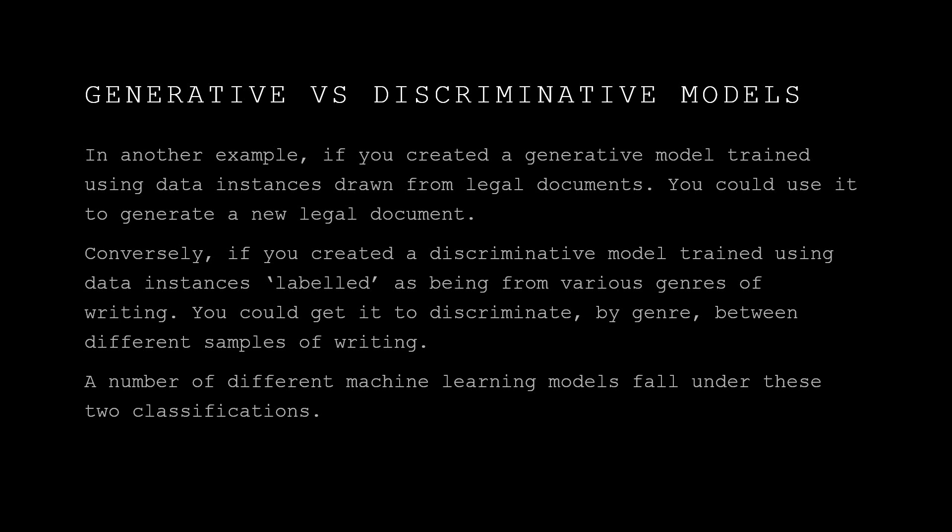In another example to differentiate between the two types of models: if you created a generative model trained on data instances drawn from legal documents, you could use it to generate a new legal document based on whatever you trained it on. Conversely, if you created a discriminative model trained using data instances labelled from various genres of writing, you could get it to discriminate by genre between different samples of writing. So there's this contrast between creating a model that generates something based on its training, and something that discriminates between the things it was trained on.